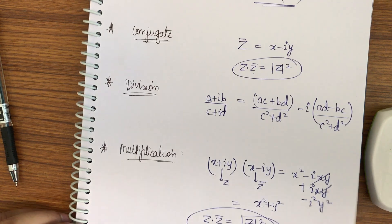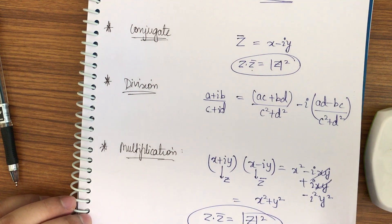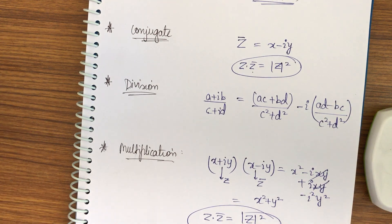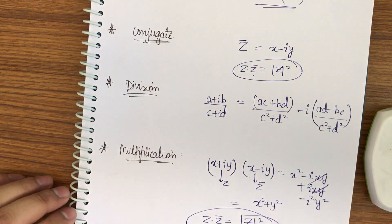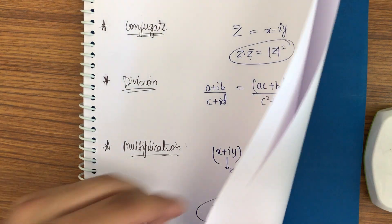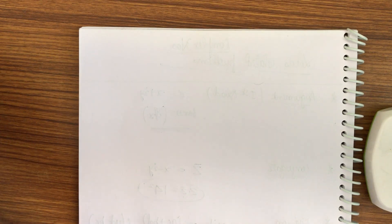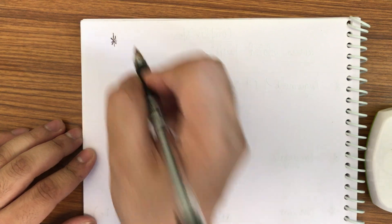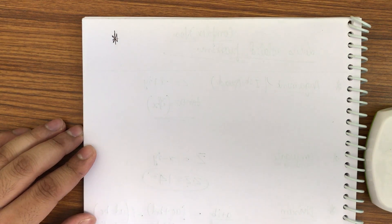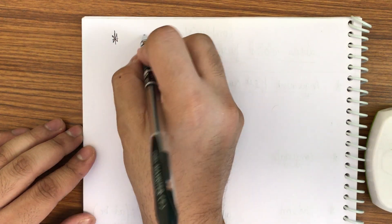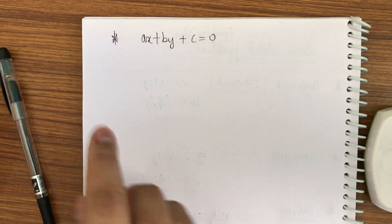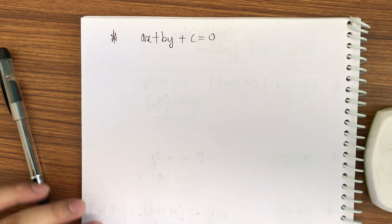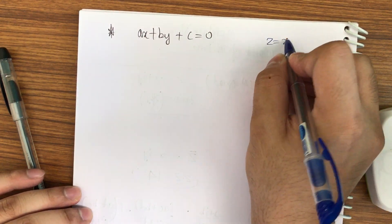If there are any doubts in this chapter you can definitely ask me in the comment section. It is one of the most important chapters. Now let me begin the main topic for which this video is made. You know what the equation of a straight line is in coordinate geometry — I shall relate coordinate geometry to complex numbers. The straight line is ax + by + c = 0. Let me now write z = x + iy.